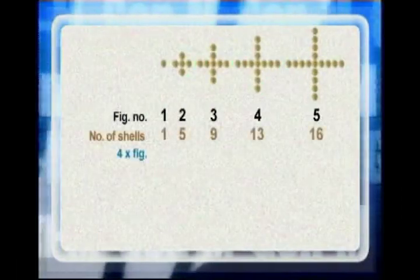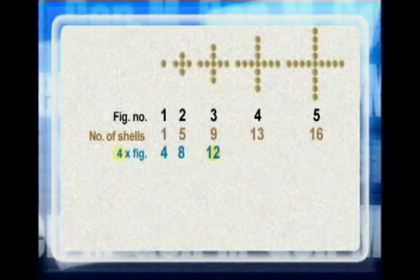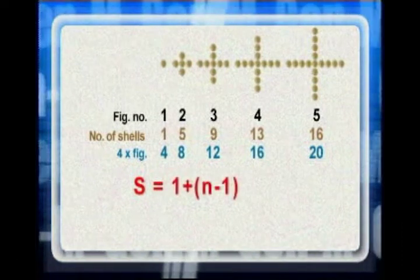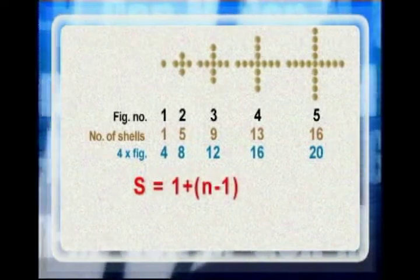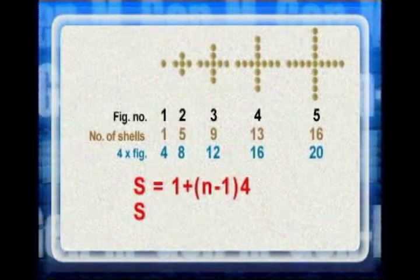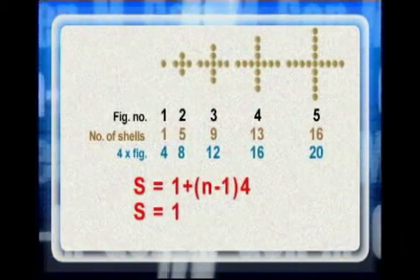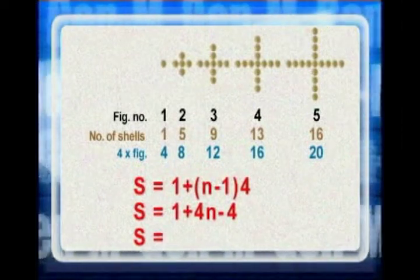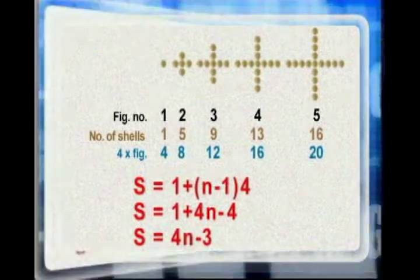But you know, before we move on to the next method, it's best for us to practice again. That's the only way to perfect math. Here, we need to add four shells after the first shell. We can say that the number of shells S is equal to 1 plus N minus 1 multiplied by 4. To simplify, S is equal to 1 plus 4N minus 4, or 4N minus 3.